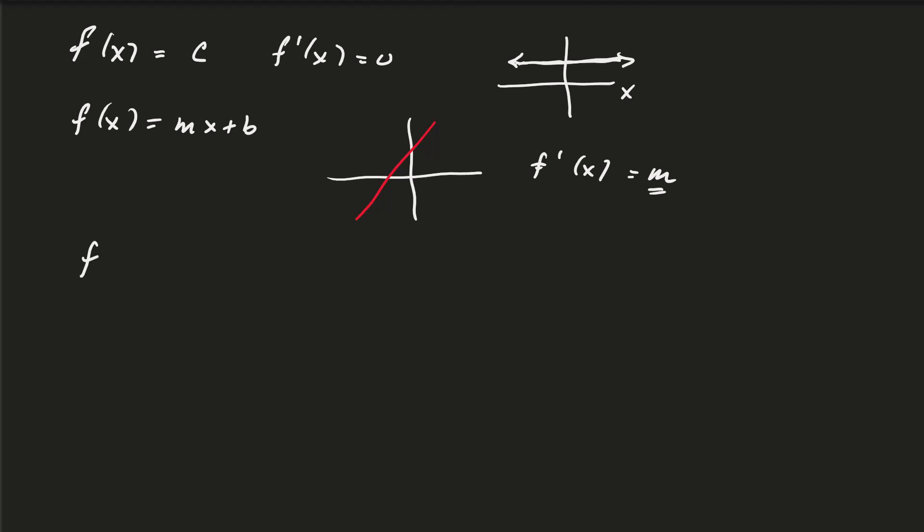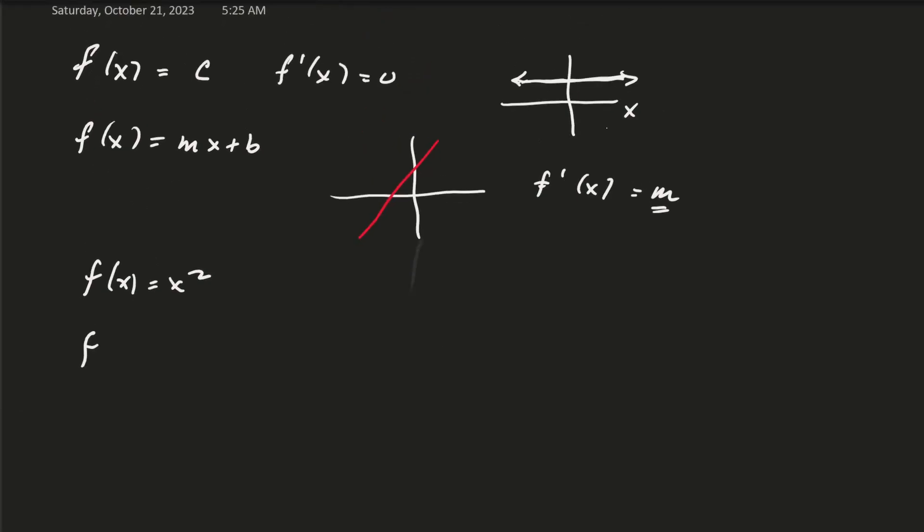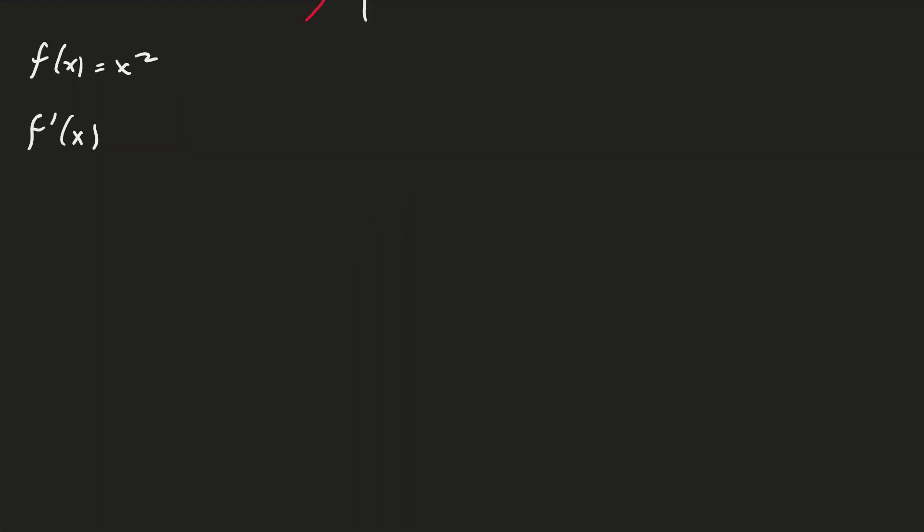Next, let's go to the parabola f(x) = x². If I use the definition of the derivative, then f'(x) equals the limit as h goes to 0 of [f(x+h) - f(x)]/h.